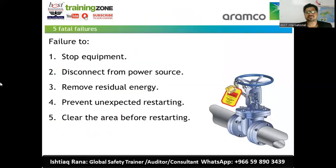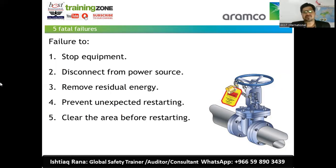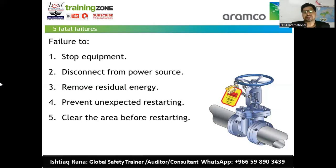Before we discuss isolation procedures, it's very important to understand the five fatal failures. You may have reliability engineers, maintenance technicians, safety engineers, work permit issuers, CSC supervisors, and many competent people working together. Isolation and LOTO is a particular technical procedure — that's why there's a separate ULB equipment opening and line break permit. Even when issuing the ULB permit, it is still considered a hazard because of these five fatal failures.